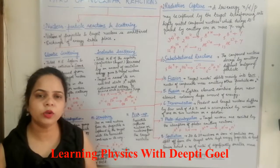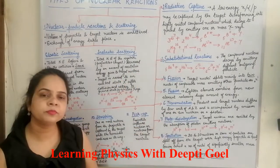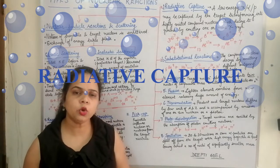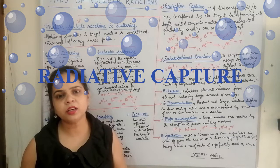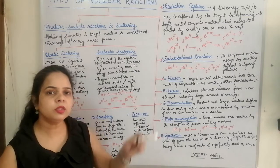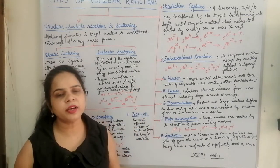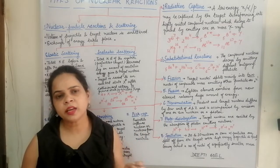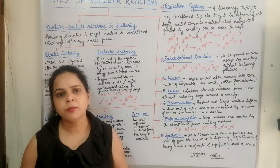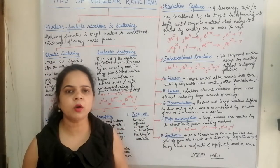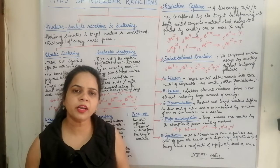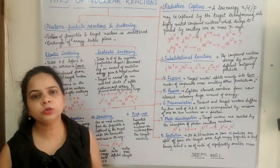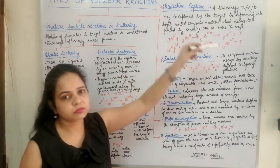The second type of nuclear reaction is radiative capture. In radiative capture, a low-energy projectile — which could be a proton, alpha particle, or neutron — is fired on the target nucleus, forming a compound nucleus excited to a higher state. This compound nucleus does not disintegrate and liberate product particles; instead, it returns to the ground state by emitting gamma rays — one, two, or more. This is called radiative capture because gamma rays are emitted.